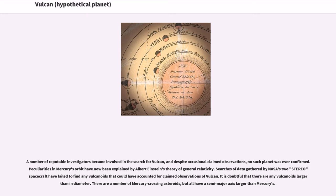Peculiarities in Mercury's orbit have now been explained by Albert Einstein's theory of general relativity. Searches of data gathered by NASA's two STEREO spacecraft have failed to find any vulcanoids that could have accounted for claimed observations of Vulcan.